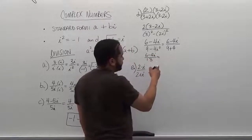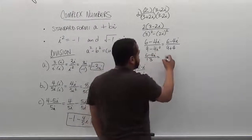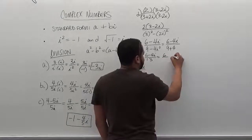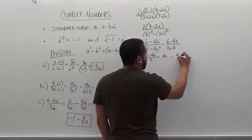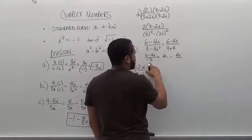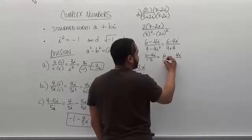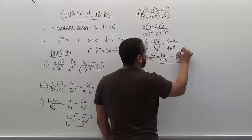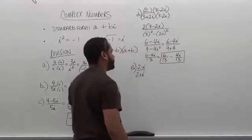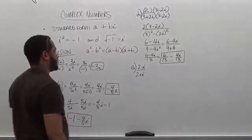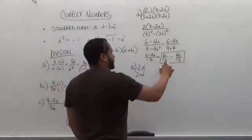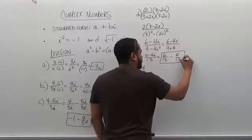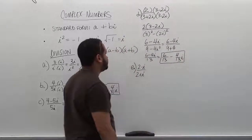We split the fraction into two parts, separating the 6 from the 4i and giving each the denominator's value. In complex form — real number first, imaginary second — we get 6 over 13 minus 4 over 13 i.